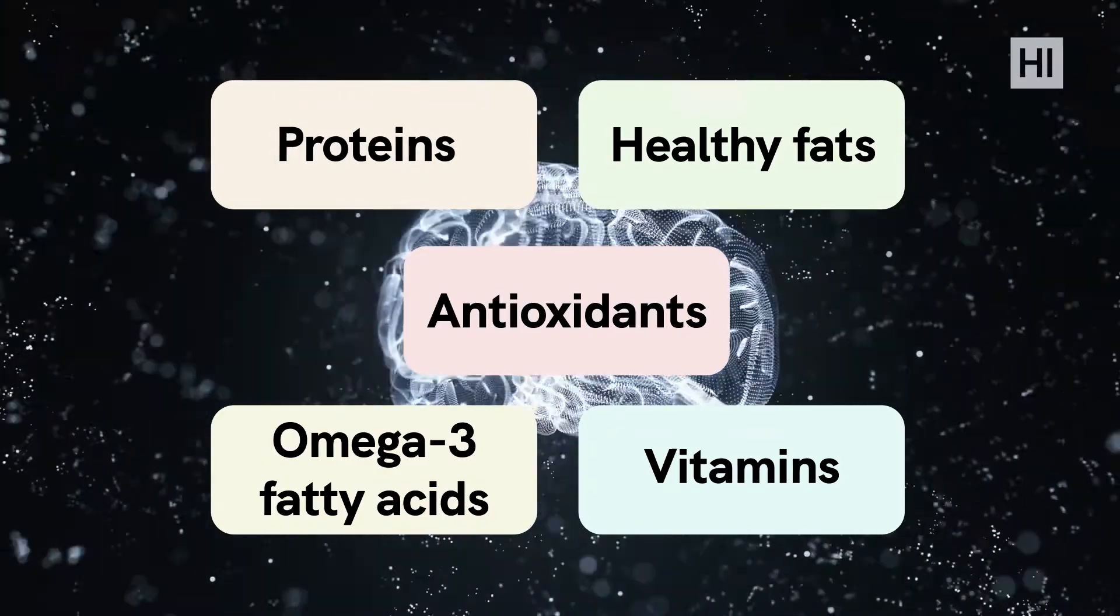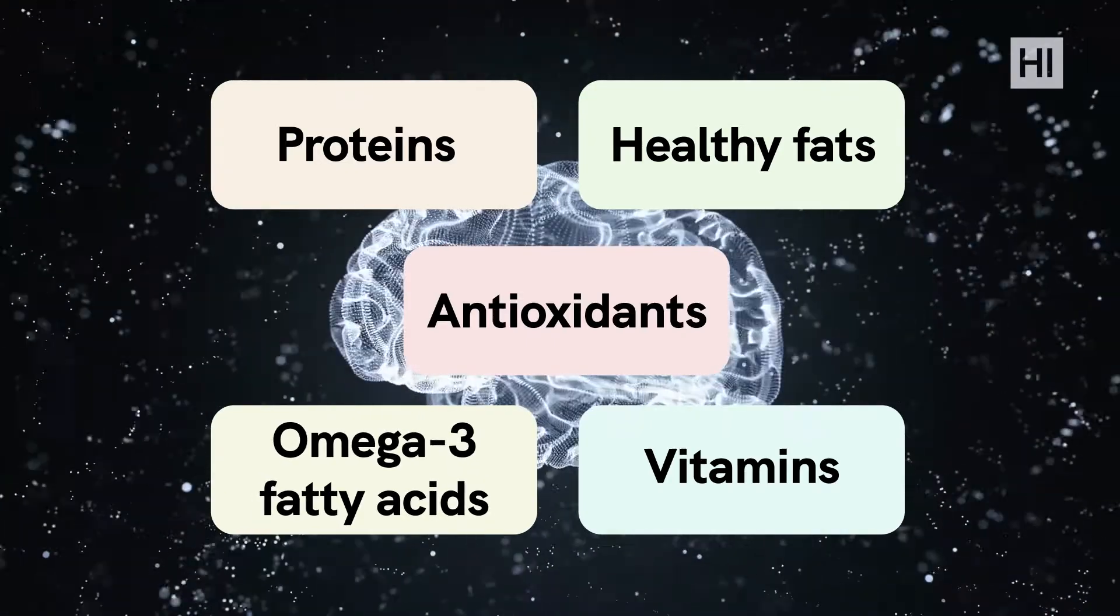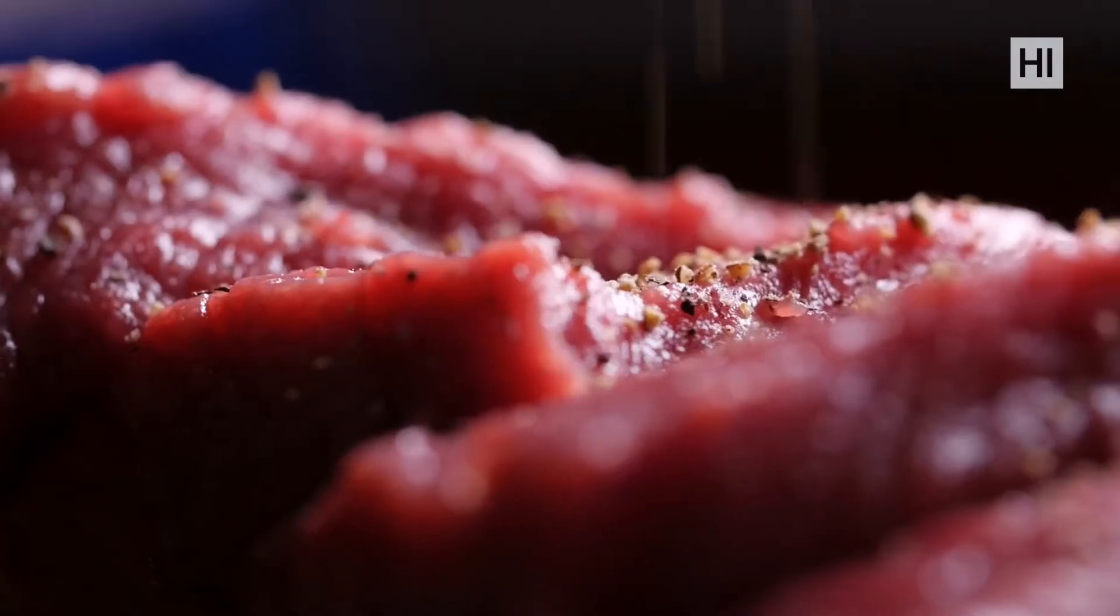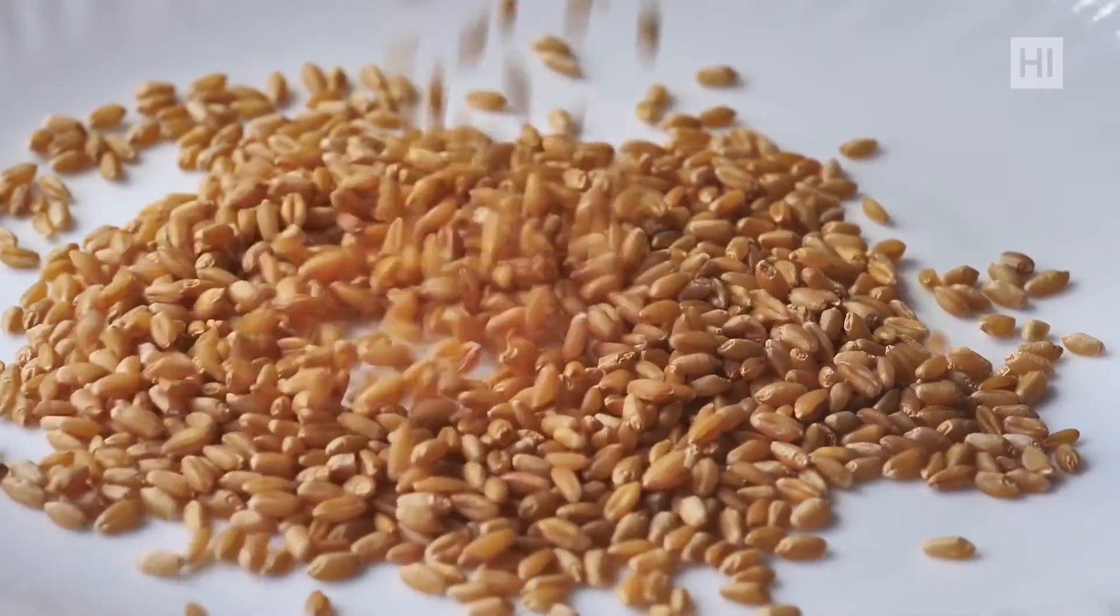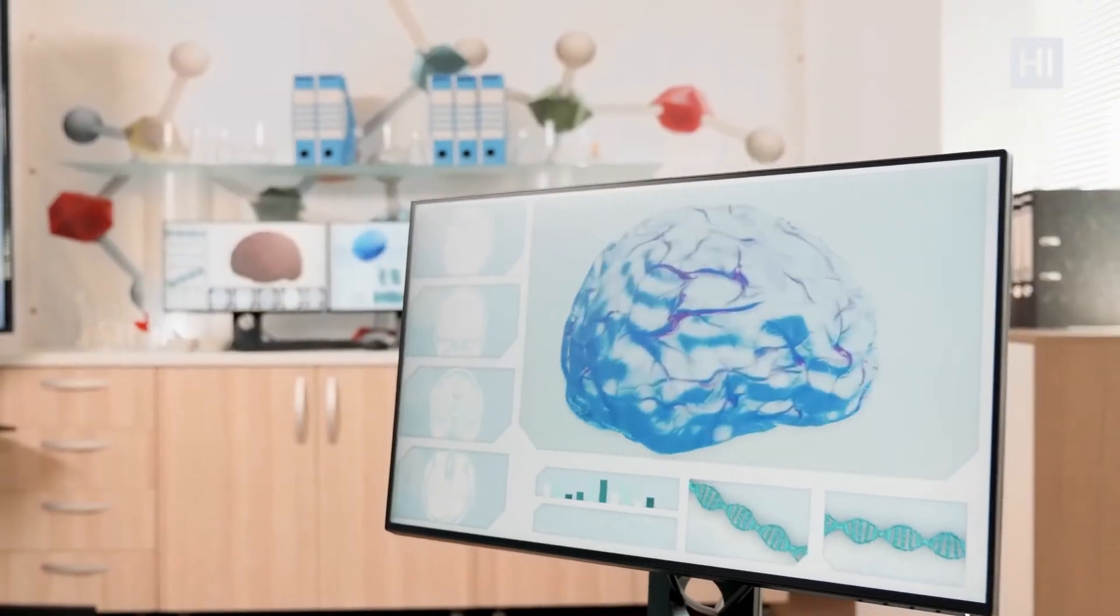Brain foods include proteins, healthy fats, antioxidants, omega-3 fatty acids, and vitamins. You can never go wrong by adding more fresh produce, lean protein, and whole grains to your diet. Cutting back on processed foods and saturated fats can also give your cognitive function some love.